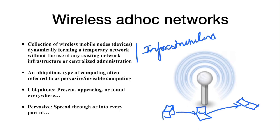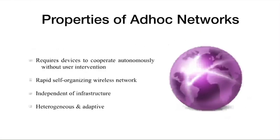The routing protocols are the challenge in forming ad hoc networks. This is also referred to as ubiquitous computing, often called pervasive or invisible computing — meaning the network is found everywhere. One good example today is the hotspot: you can use your Wi-Fi device to share a hotspot, and that is also considered under wireless ad hoc networks.